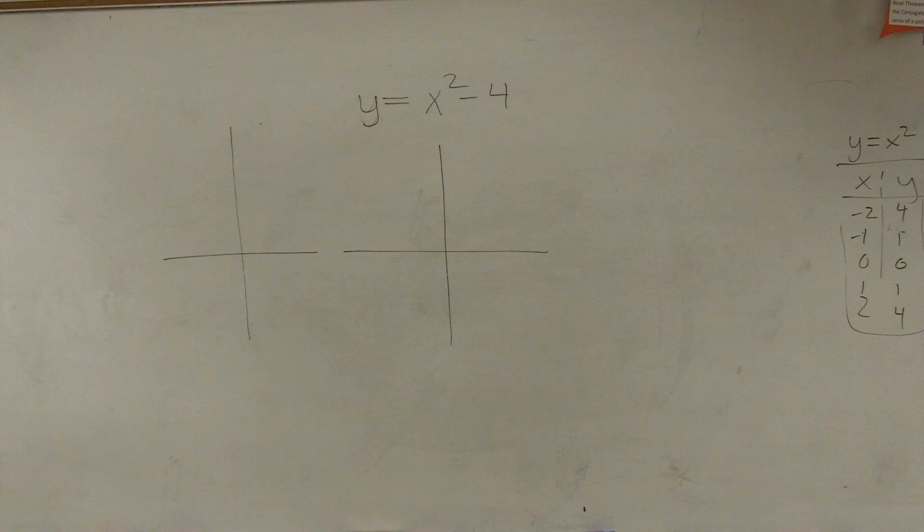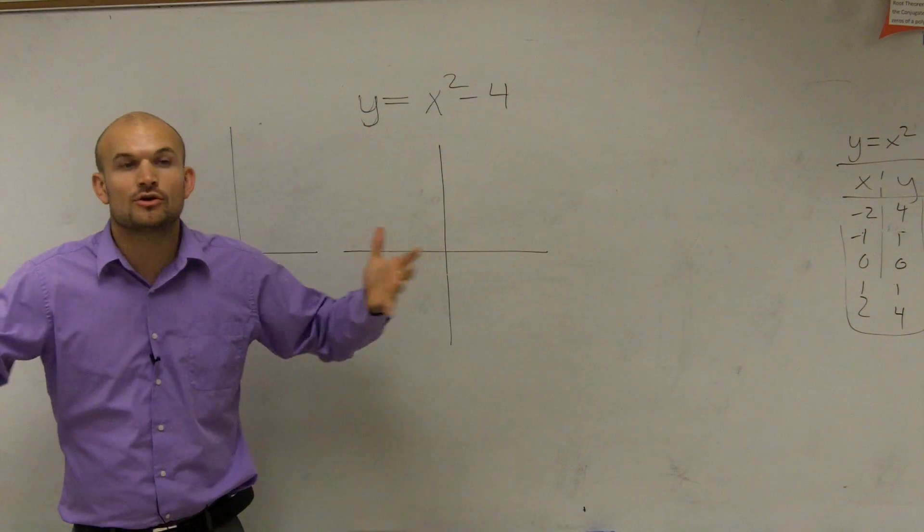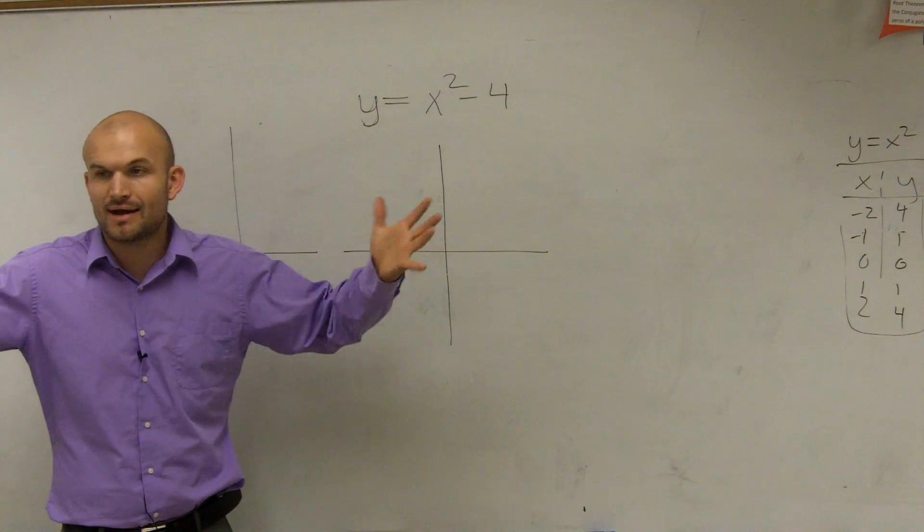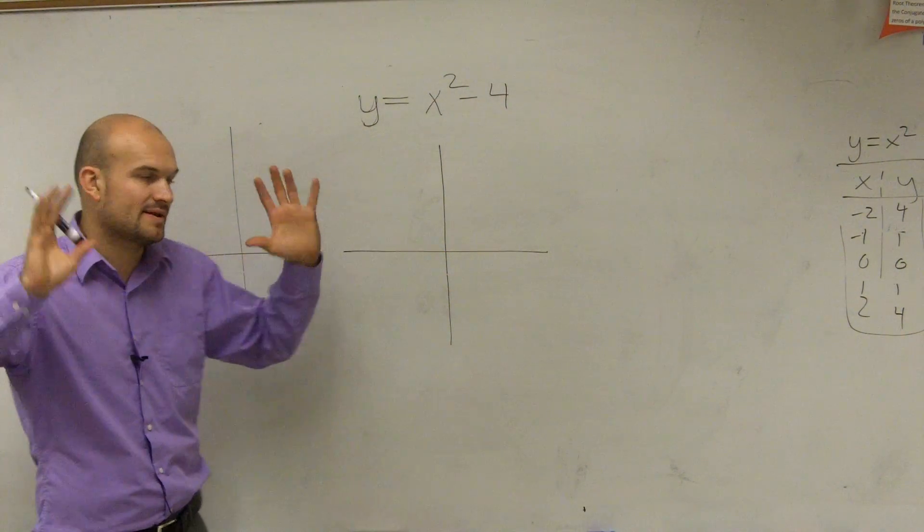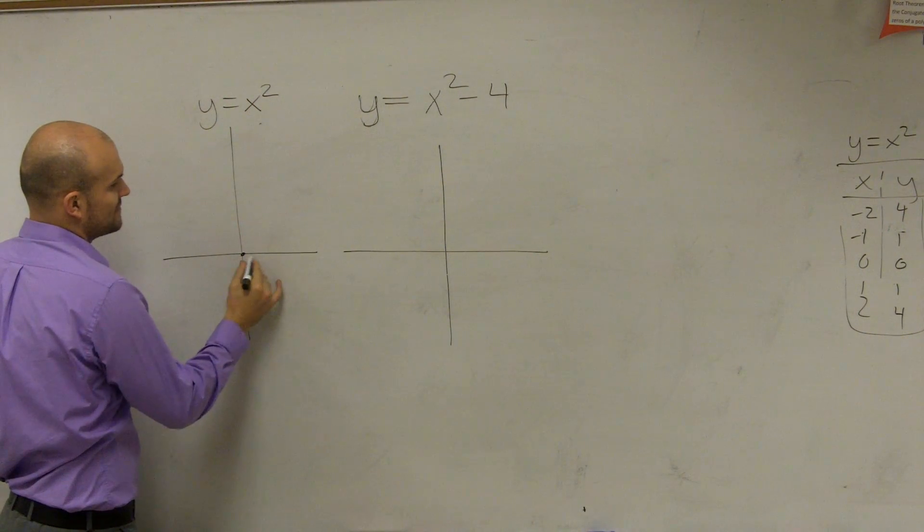All right, so ladies and gentlemen, if I was going to graph y equals x squared minus 4, the first thing I want to do is you guys have to know the parent graph. I wrote down all the tables for the parent graph, now I'm just going to type in the parent graph: y equals x squared. You guys have to know